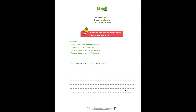Adjectives are typically placed before nouns. They have no plural forms. Examples: The beautiful girl can play hockey. The calm dog is a great pet. The tidy room is next to the kitchen. The red flag represents that country.